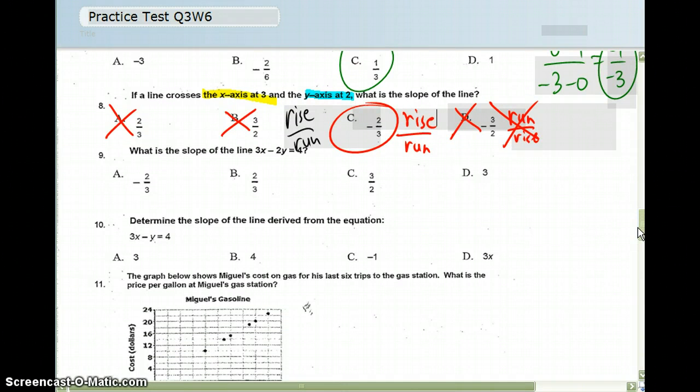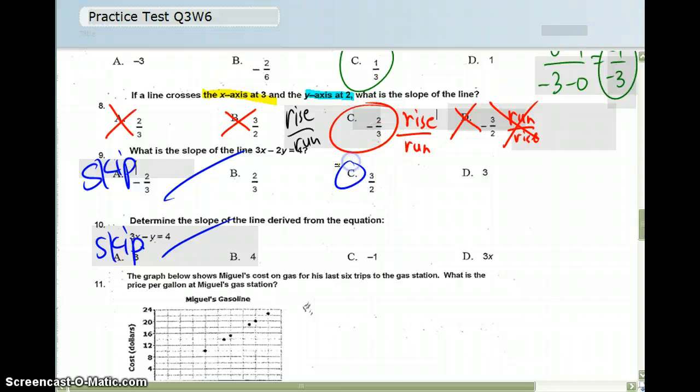M stands for slope, slope stands for M. Rise over run. Go ahead and skip 9 and 10. We did not learn that, so you don't have to do that. But if you are curious about the answers, number 9 is C, and number 10 was A.